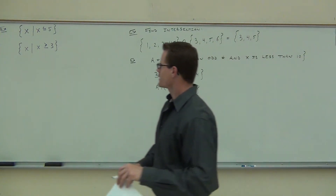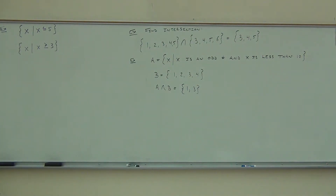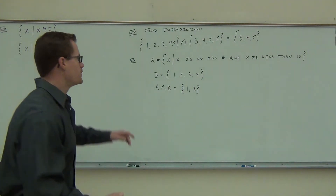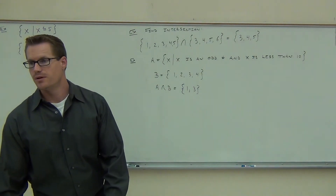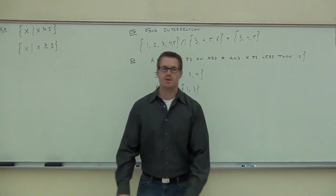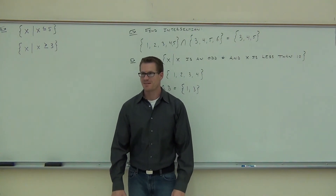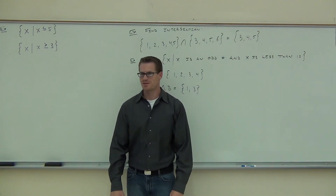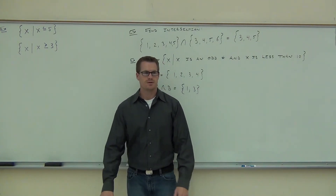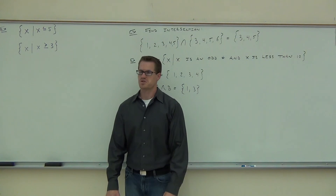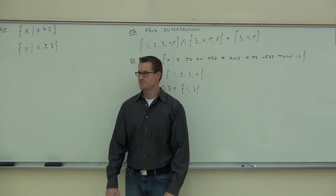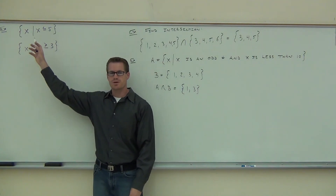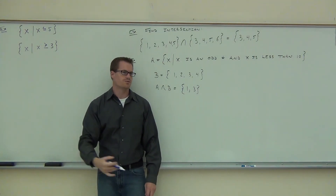Look at your first set: x such that x is less than or equal to 5. Can you give me a number in this set? 5 works because of the 'equal to' part. 4 works, 2 works, 3 works. Negative 5 works — it's less than 5. Negative 6 works too. How about 3.2? Yes. This set includes every number you can possibly think of that is less than or equal to 5.